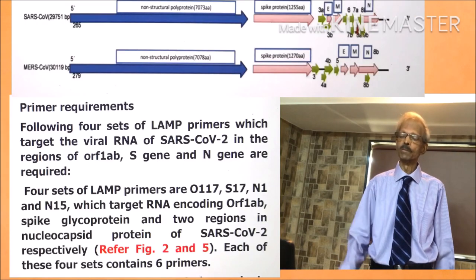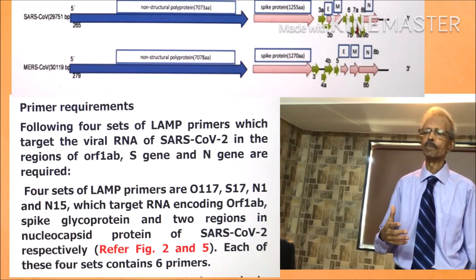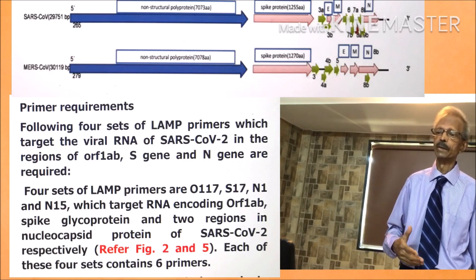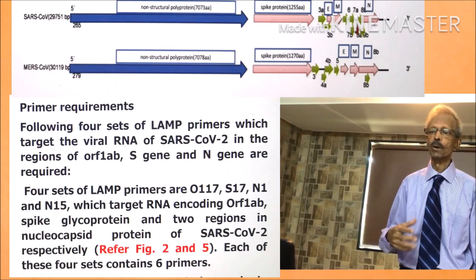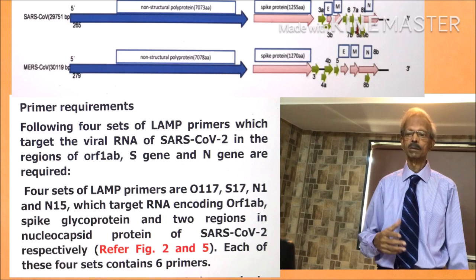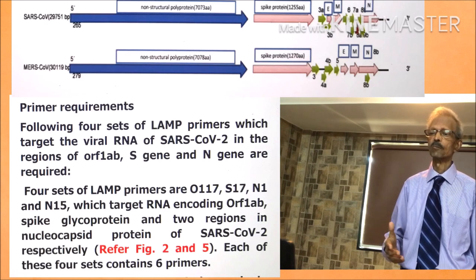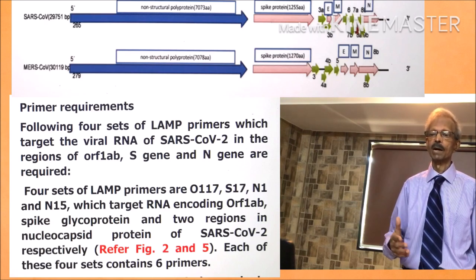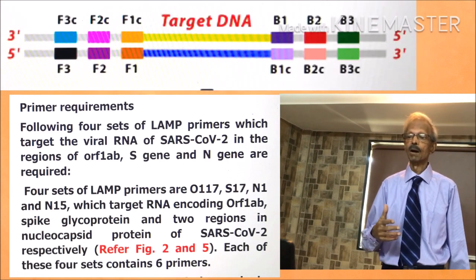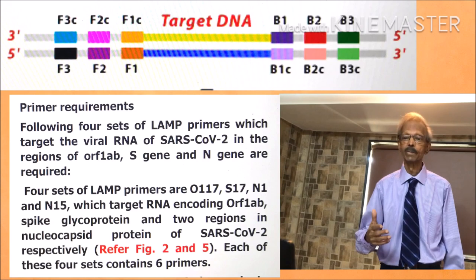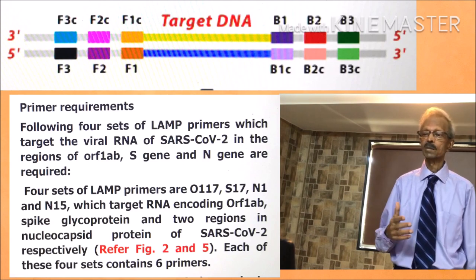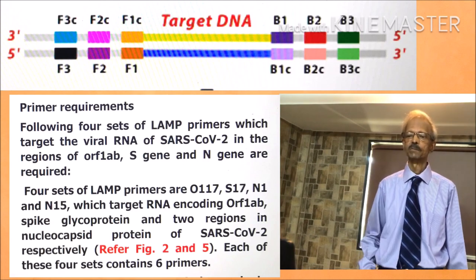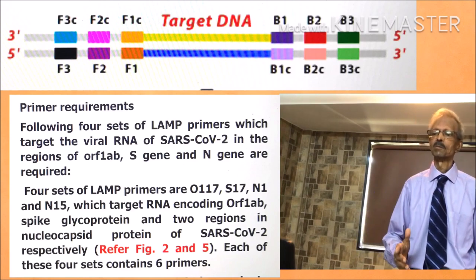There is a specific requirement for primers. Four sets of LAMP primers target the viral RNA of SARS-CoV-2 in the regions of ORF-1ab, S-gene, and N-gene. These four primer sets are O117, S17, N1, and N15, which target RNA coding for ORF-1ab, spike glycoprotein, spike glycoprotein, and two regions in the nucleocapsid protein of SARS-CoV-2 respectively. Each of these four sets contains 6 primers.